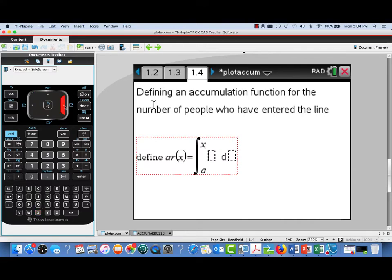And we'll be integrating the rate at which people enter the line. That's our function R of T. And then we'll integrate with respect to T.